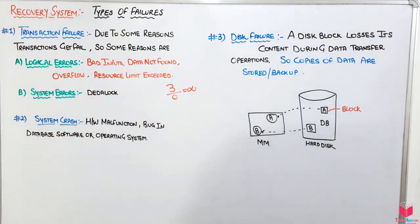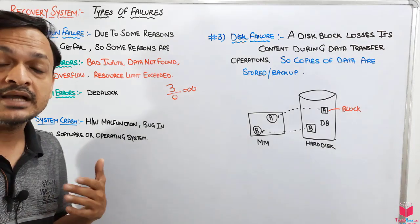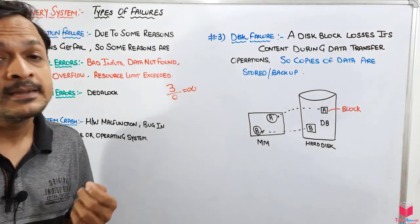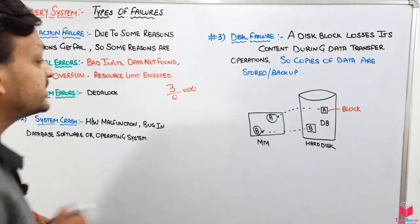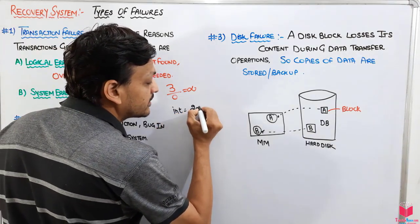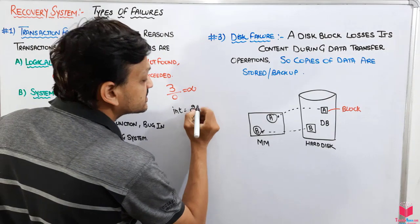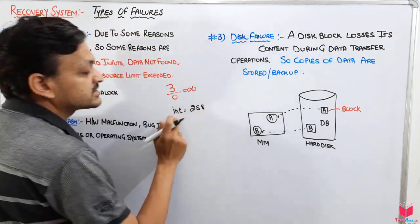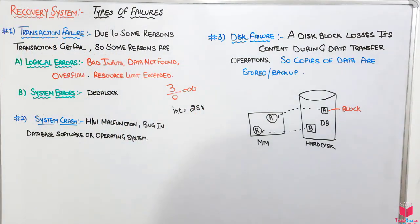Overflow is exceeding the range of the data. That means suppose we have an integer and we have mentioned its range from 2 to 8. Suppose it's the integer and we are providing exceeding its range, that means it's an overflow error.